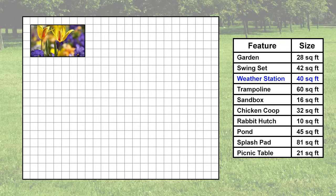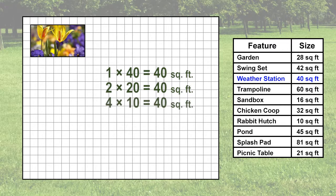Next, let's place the weather station. The weather station needs 40 square feet. What factors multiplied together would give us the length and width of our weather station? If we list the factor pairs, we would have 1 times 40, 2 times 20, 4 times 10.